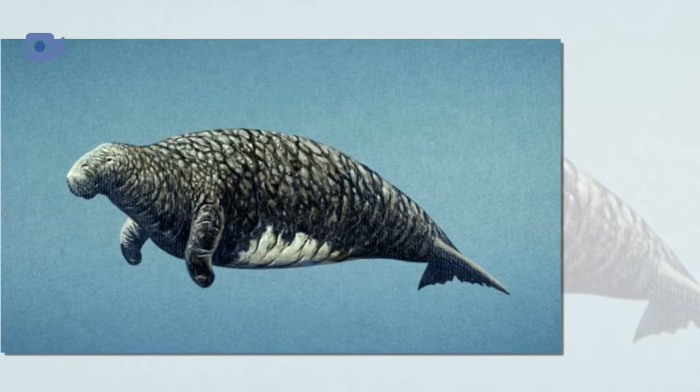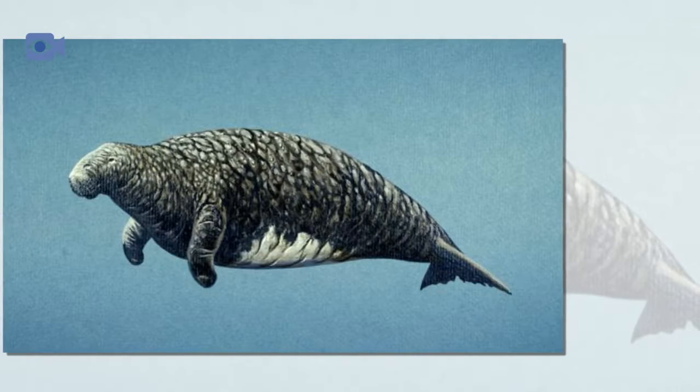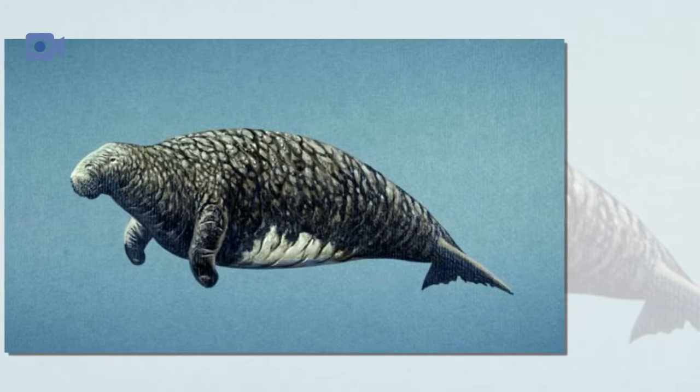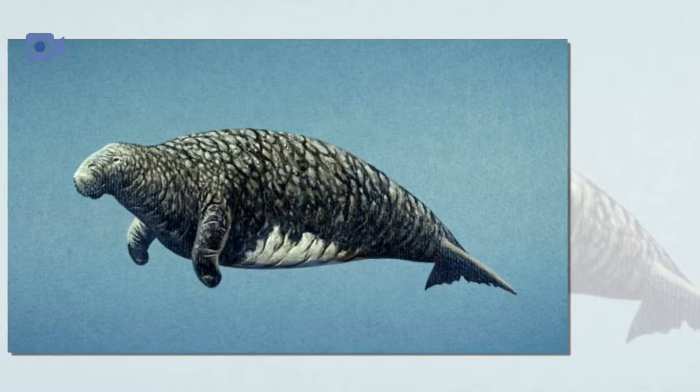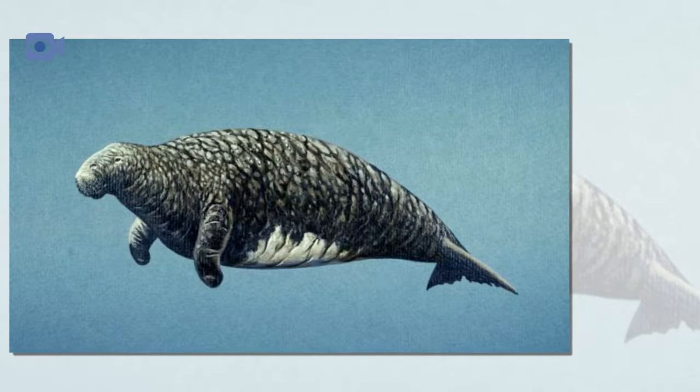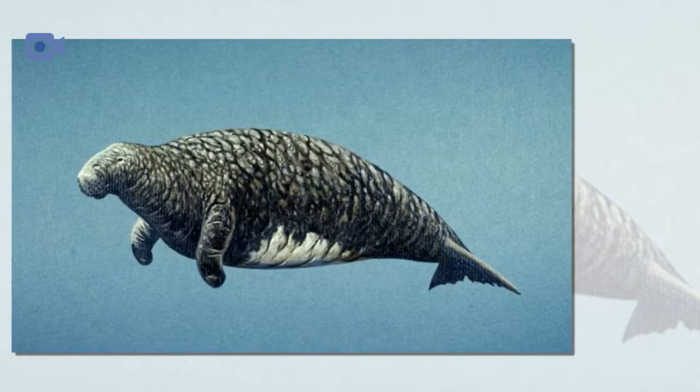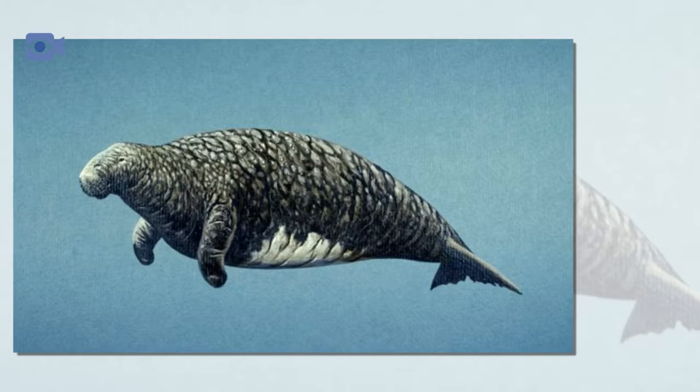The Steller's sea cow was a large marine mammal found in abundance in the North Pacific. These enormous animals were closely related to the dugong and manatee still found grazing in the oceans today, but were of considerable size at between 8 and 9 meters in length.